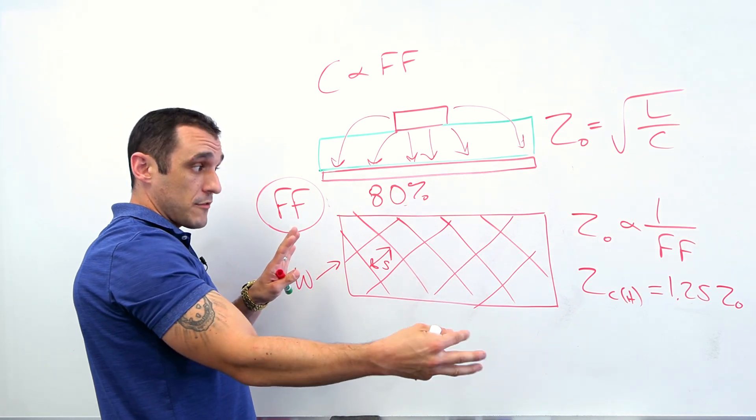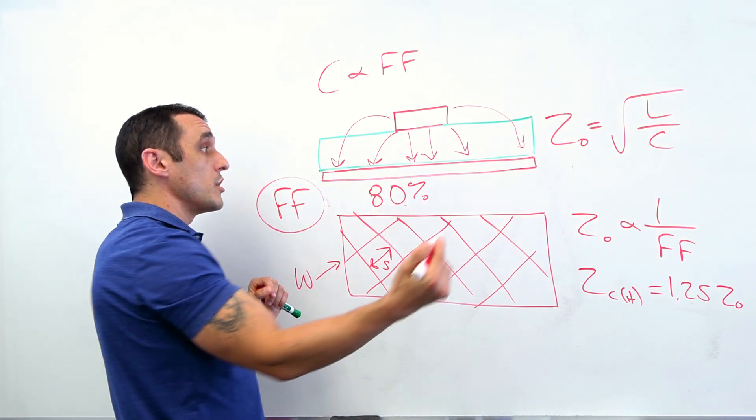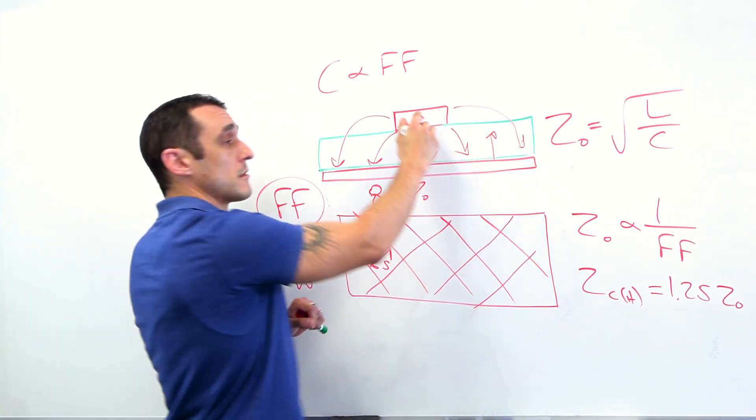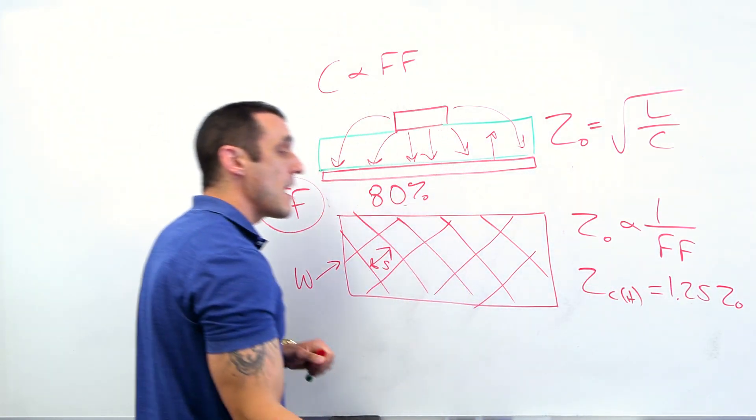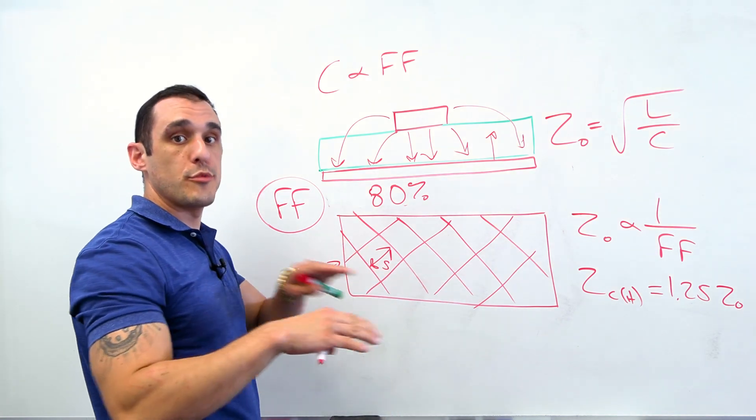So if you wanted to compensate for that, what would you need to do? Well, you would need to move this plane closer to this trace. And that's going to then bring the impedance back down. And then you could have a situation where the two impedances are equivalent.